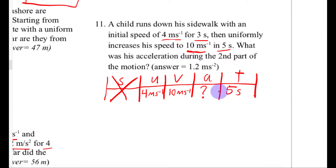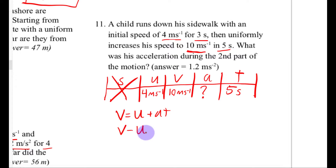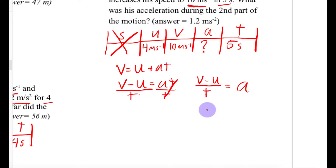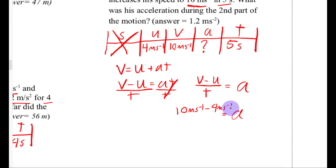We need something that connects u, v, a, and t — that's v equals u plus at. Isolating acceleration by subtracting u from both sides and dividing by t gives a equals v minus u over t. So the acceleration is 10 minus 4 meters per second divided by 5 seconds, which equals 6 over 5, giving 1.2 meters per second squared.